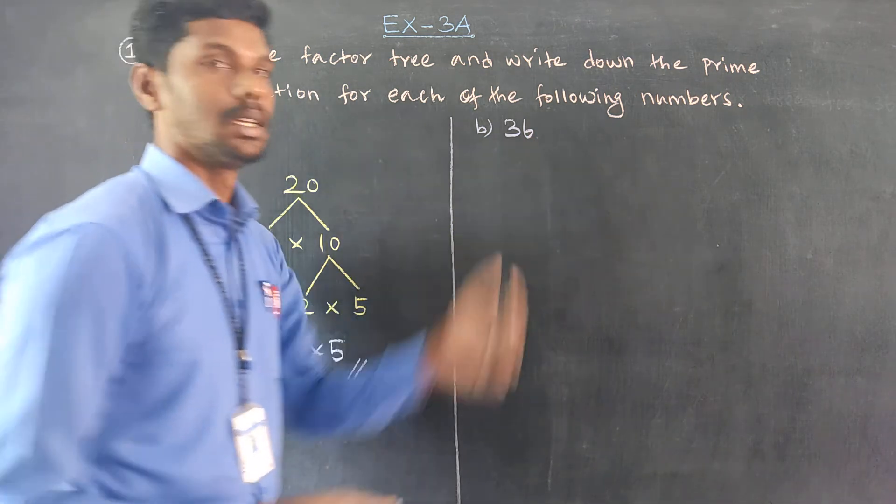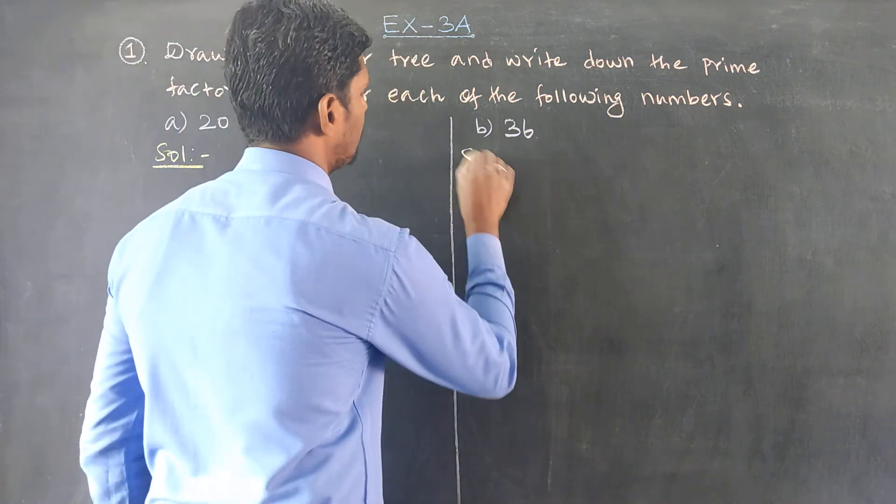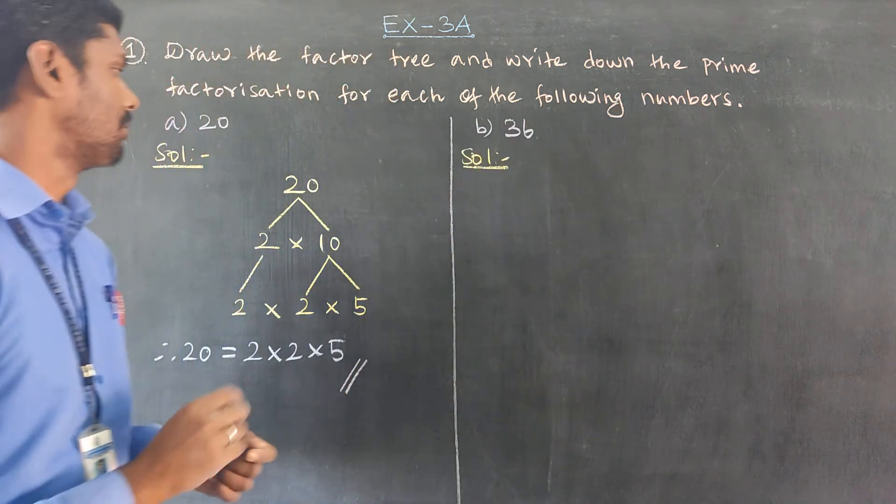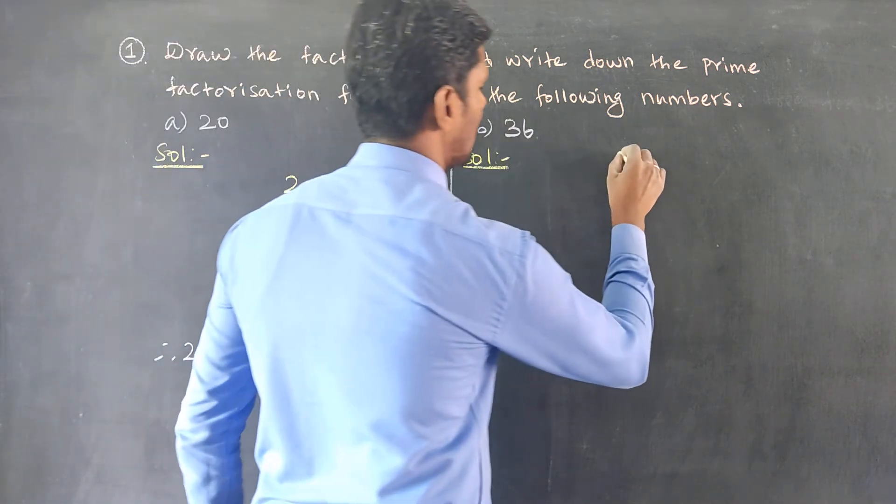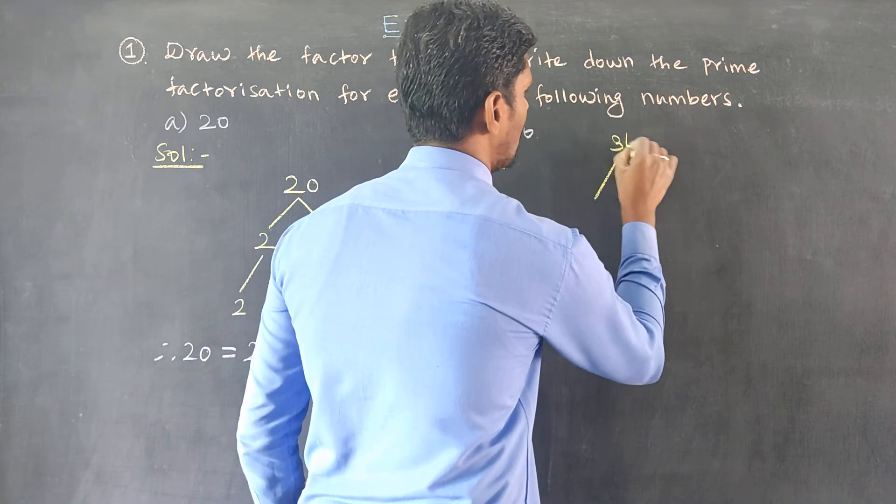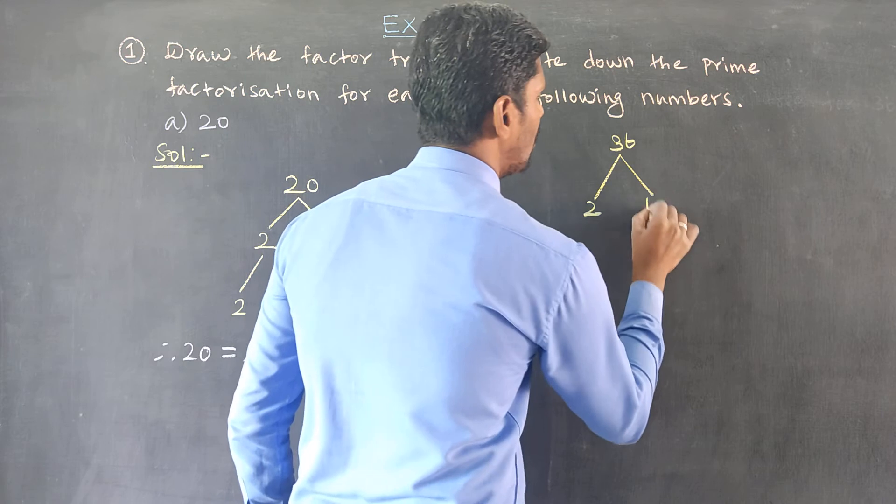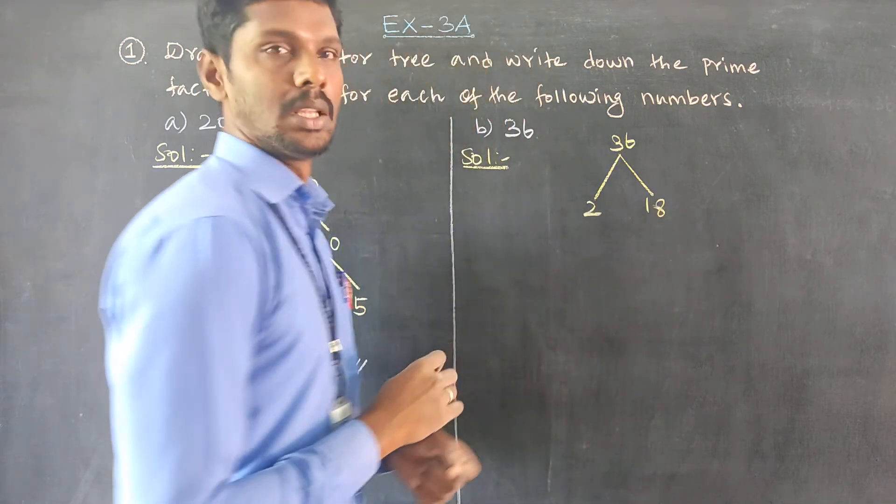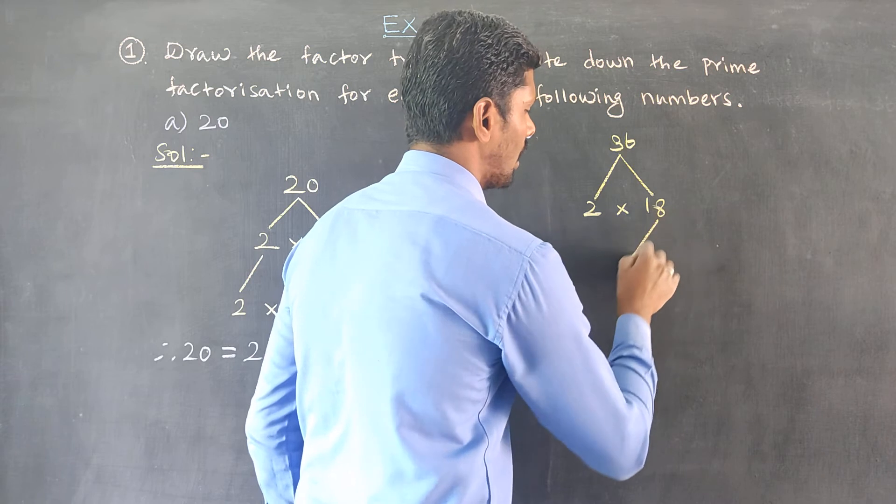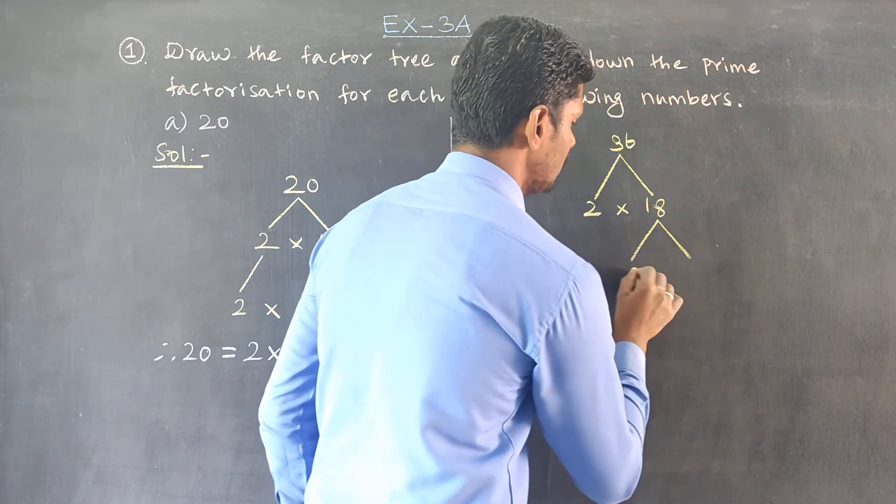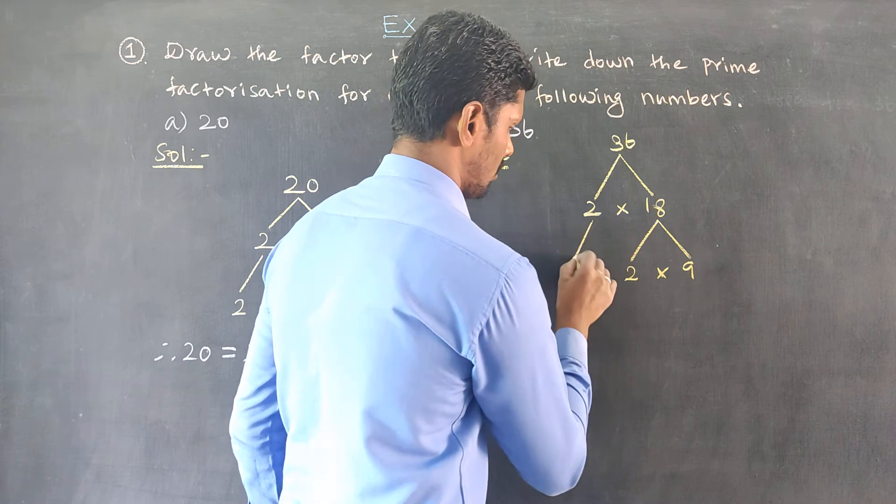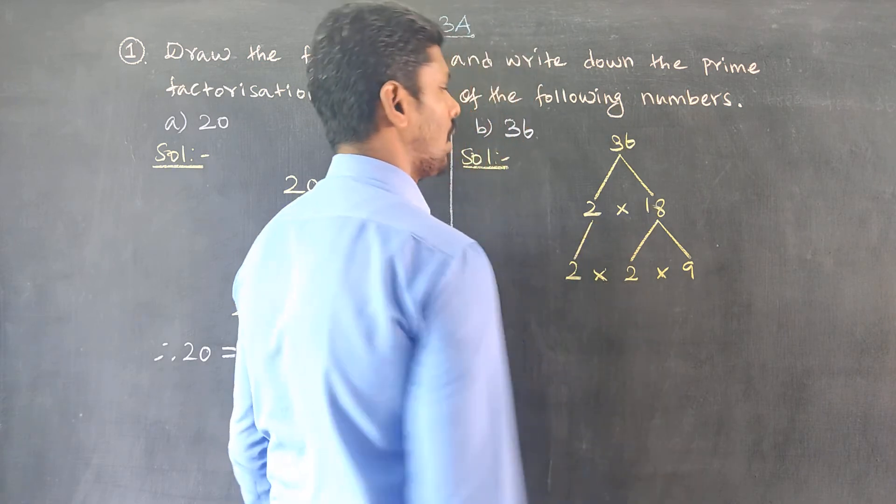Next is 36. 36 is also a composite number, so we need to factorize it. 36 equals 2 times 18. 2 times 9 equals 18.